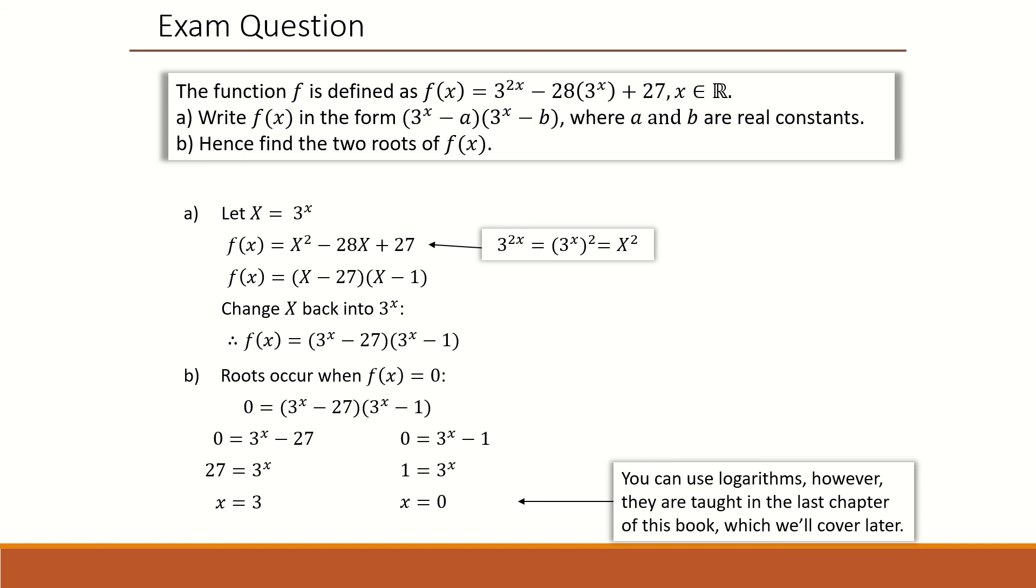An easier way, as we have not covered logarithms as of yet, this type of question can be done by inspection, where 3 to the power of x, where 27 is the same as 3 cubed. Therefore, x equals to 3. And 1 is the same as 3 to the power of 0. And then x equals to 0.